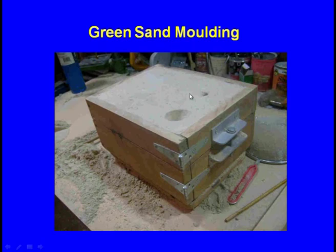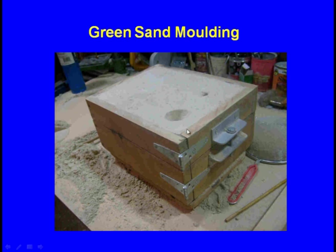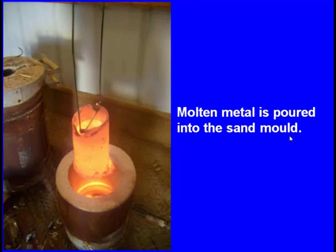Here we can see the green sand mold: the drag is the lower molding box and the cope is the upper molding box. Most of the times we use two molding boxes. The sprue passes inside, and this is the pouring cup. When molten metal is poured it flows inside the mold cavity, and once the cavity is full the metal rises through the riser. Here we can also see the molten metal ready for pouring.